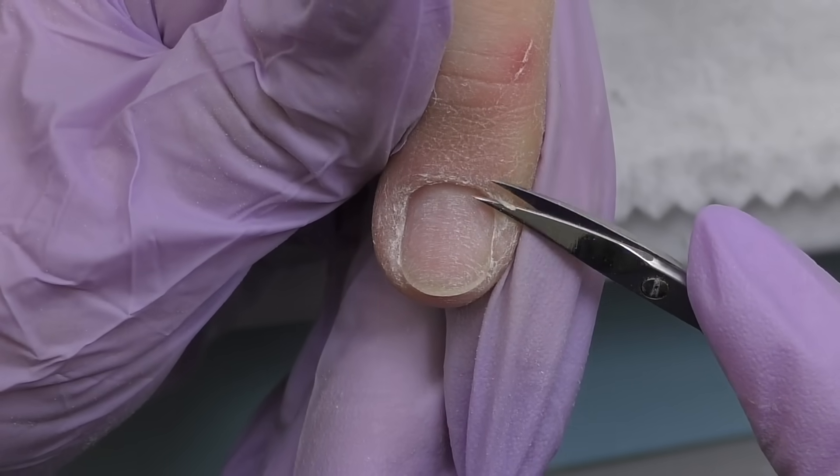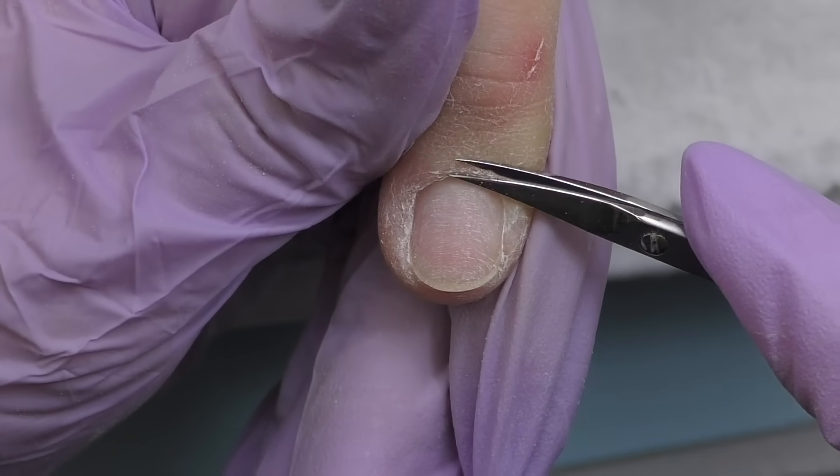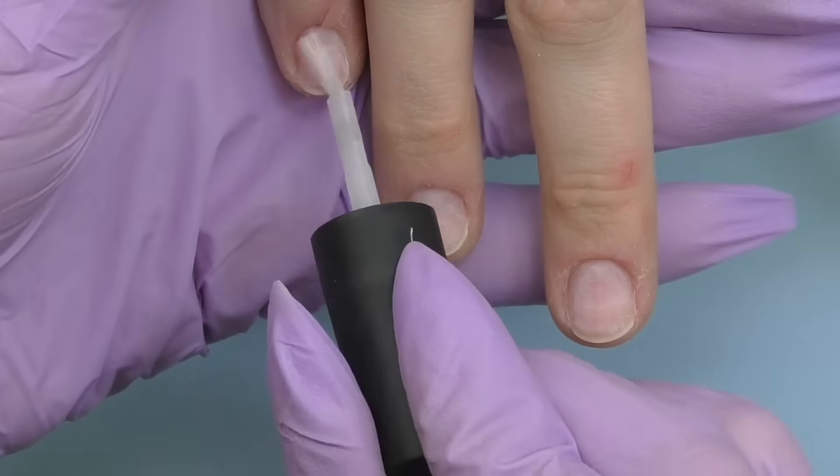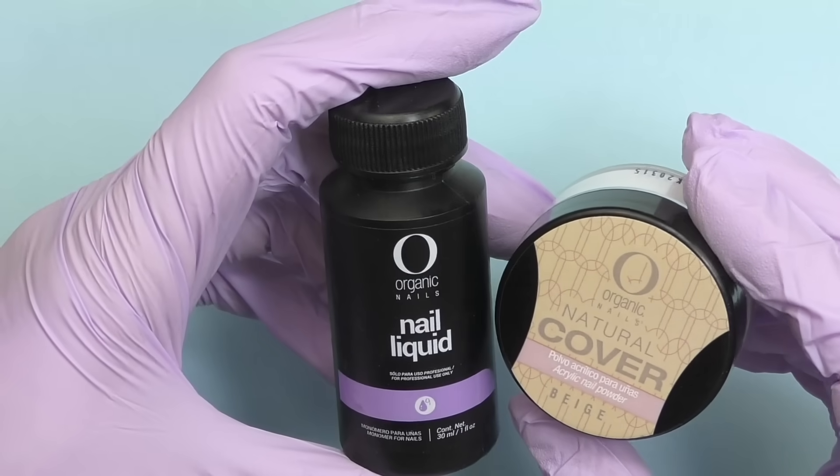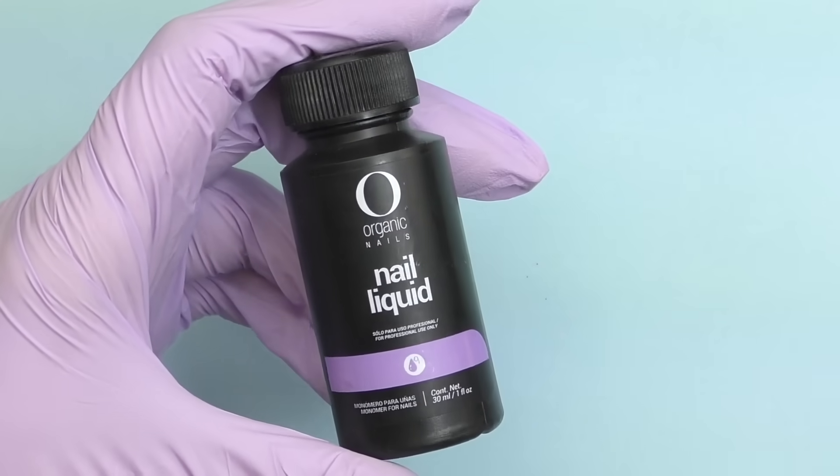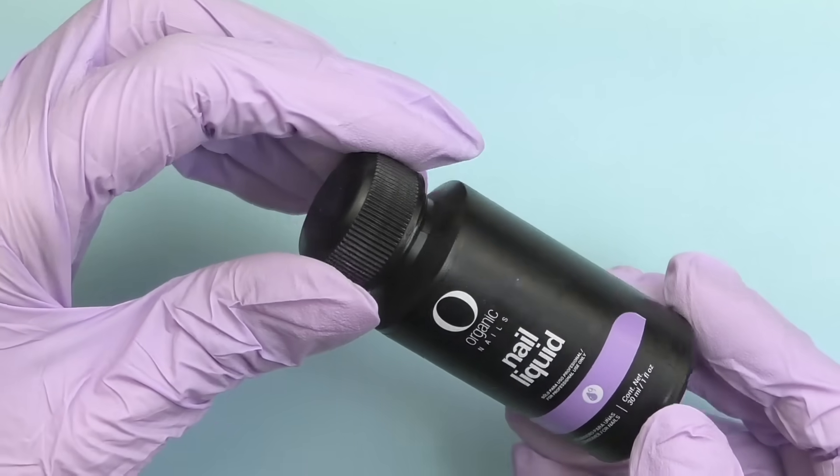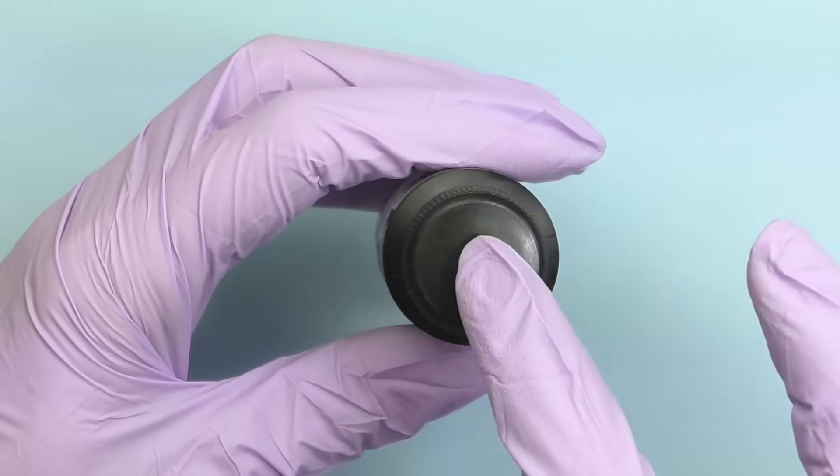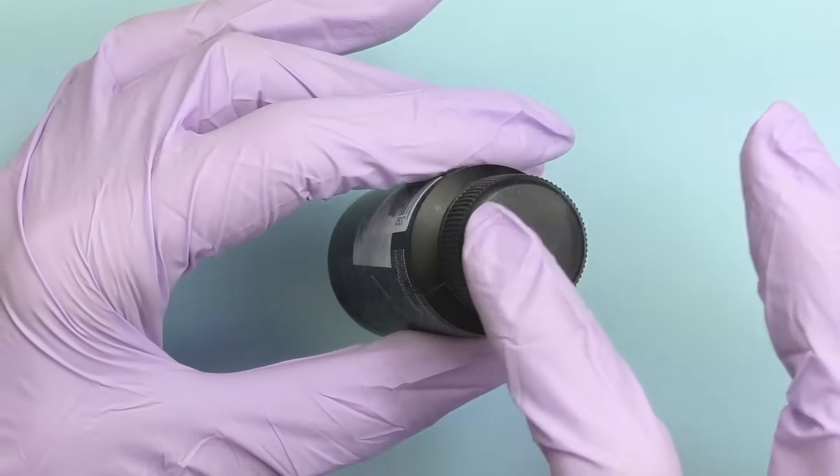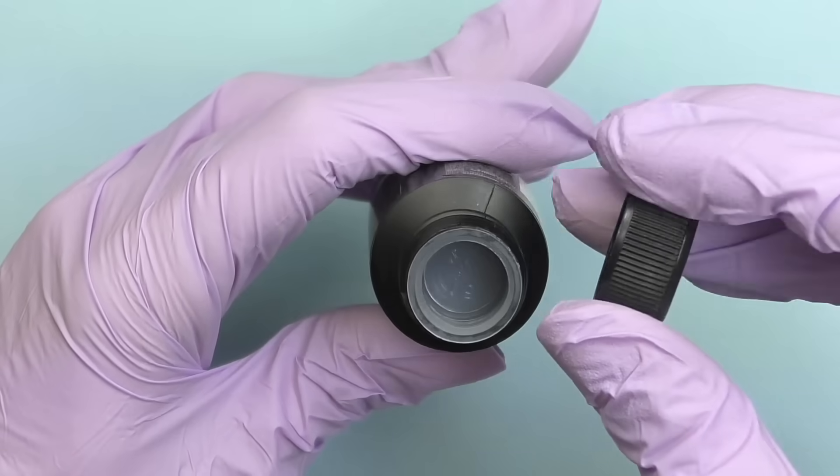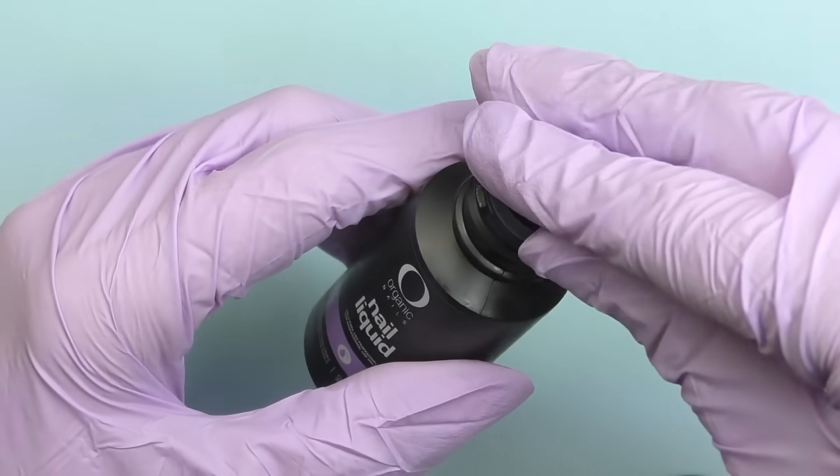We're going to do acrylic extensions today and I decided to try a new Mexican brand called Organic Nails. I bought only the most important things we need when we're trying the product. So, I have a monomer. This is a small bottle, only one ounce or 30 milliliters and because of the transportation, it got a little sticky and I think I can even feel the smell coming from it.